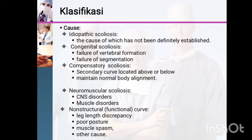Congenital scoliosis results from failure of vertebral formation and failure of segmentation of the vertebrae. Compensatory scoliosis occurs as a secondary curve located above or below a primary scoliosis, happening as the body's attempt to maintain normal alignment. Neuromuscular scoliosis is caused by central nervous system disorders and muscle disorders.